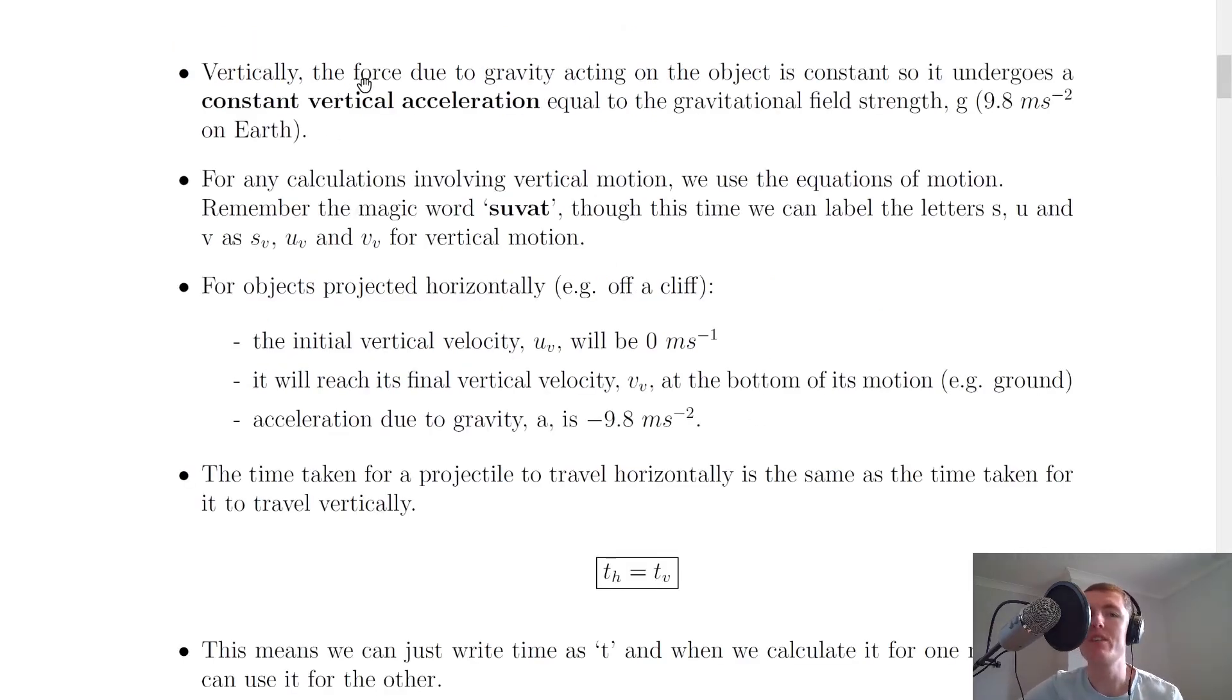If we think about the vertical motion now, vertically the force due to gravity acting on the object is constant, so it undergoes a constant vertical acceleration, equal to the gravitational field strength g, at 9.8 metres per second squared on Earth. Another name for this is the acceleration due to gravity. So vertically projectiles will always have a constant vertical acceleration due to gravity, and that takes a value of 9.8 metres per second squared on Earth. Obviously if the object was on a different planet, it would take the acceleration due to the gravitational field strength on that planet. So if it was on the moon, it would be 1.6 metres per second squared and so on.